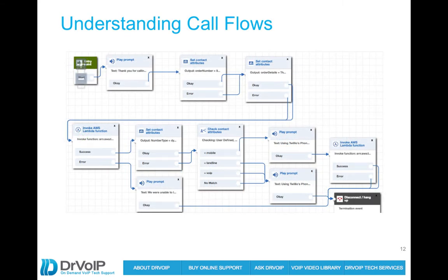Call flows are the meat and potatoes of the AWS Connect system. If anybody has worked with scripting in UCCX, Shortel, or any of the popular IVR definition tools, you drag various steps out to a palette, get them connected up, and define the various actions — for example, play prompt, dictate which prompt to play, etc. We'll take a look at this in great detail.